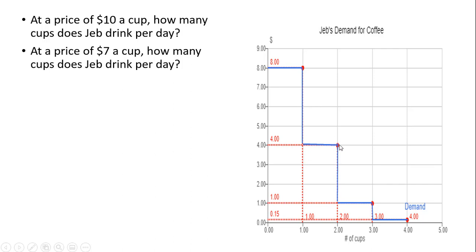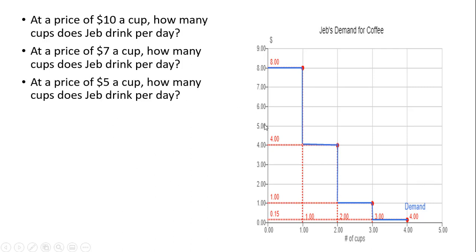He's not going to consume the second cup — at most Jeb is willing to pay $4 for the second cup, so he's not going to pay a market price of $7 for something he values at $4. At a price of $7, we take that price, walk it across horizontally until we bump into the demand curve, and Jeb will buy only one cup. At a price of $5, same idea — Jeb will again only buy one cup. For the second cup, he needs a price of $4 or less in order to be induced to buy it.